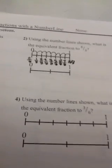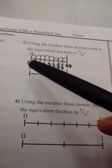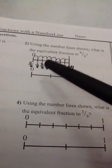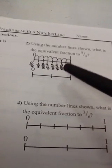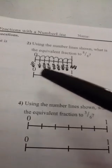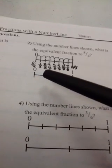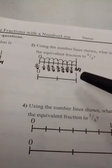For number 2, the children would count the number of spaces on the first number line: 1, 2, 3, 4, 5, 6, 7, 8. Label the fractions in eighths: 0 eighths, 1 eighth, 2 eighths, 3 eighths, 4 eighths, 5 eighths, 6 eighths, 7 eighths, 8 eighths.